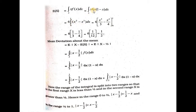We expand to get 6 times the integral from 0 to 1 of x squared minus x cubed dx. Integrating: x cubed by 3 minus x to the 4th by 4, evaluated from 0 to 1. Applying limits: upper limit gives 1 by 3 minus 1 by 4; lower limit is 0. So E of x equals 6 times (1 by 3 minus 1 by 4) = 1 by 2.